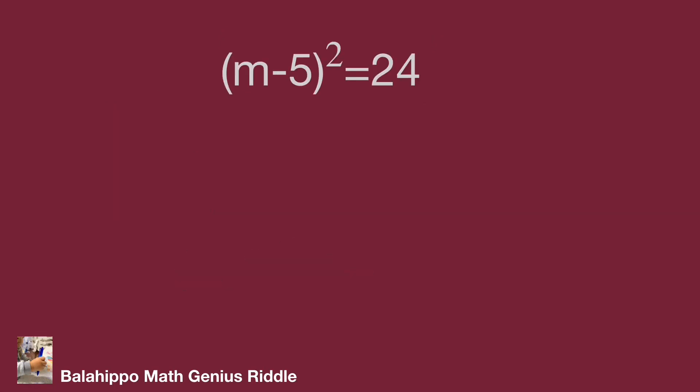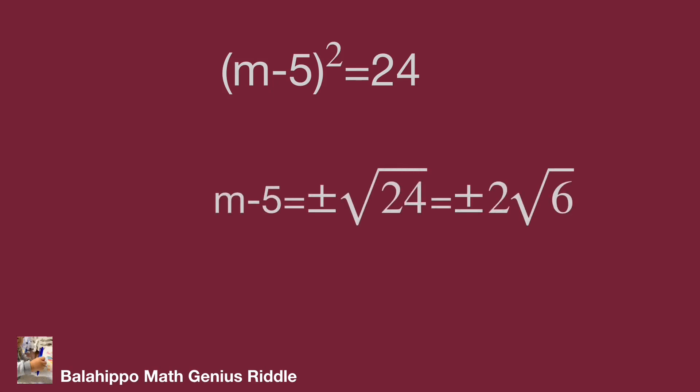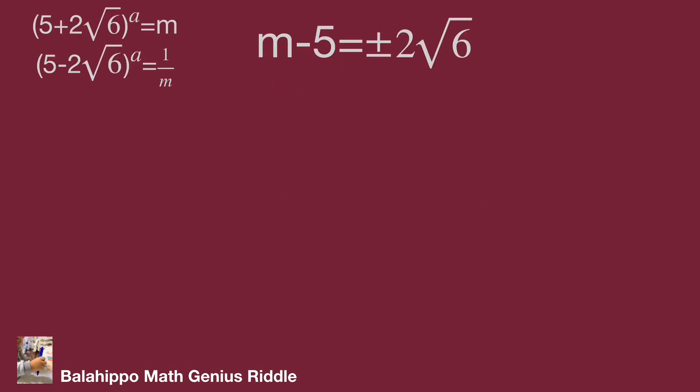Taking the square root of both sides gives m − 5 = ±√24 = ±2√6. So m equals 5 + 2√6 or m equals 5 − 2√6.